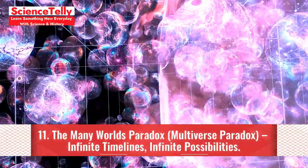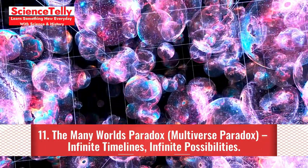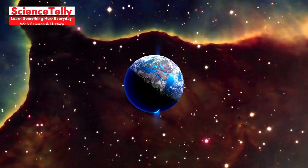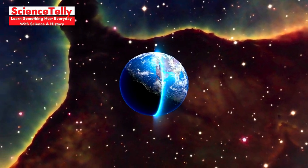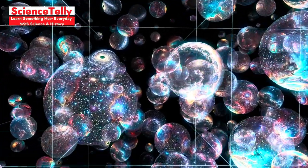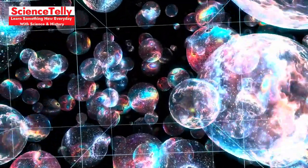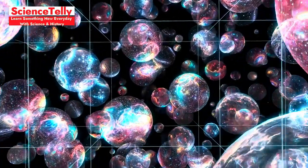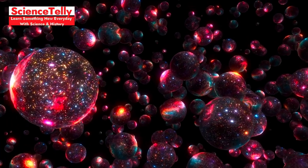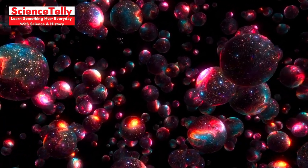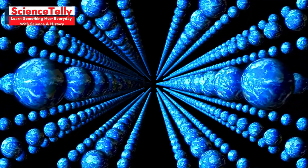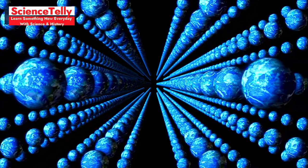Eleven, the many worlds paradox, multiverse paradox. Infinite timelines, infinite possibilities. Finally, the many worlds paradox suggests that each time you make a change, you create an alternate timeline rather than altering your own past. In this view, every choice branches off into a new universe, leaving the original timeline untouched. This theory proposes an endless array of alternate worlds, where each possibility exists in parallel. Marvel fans might recognize this from Avengers Endgame, where time travel leads to separate timelines instead of altering the main one.